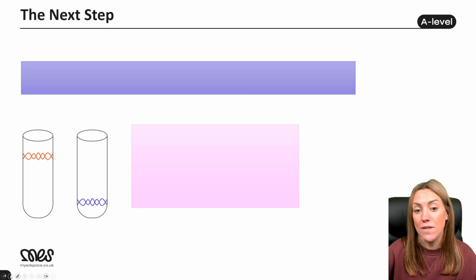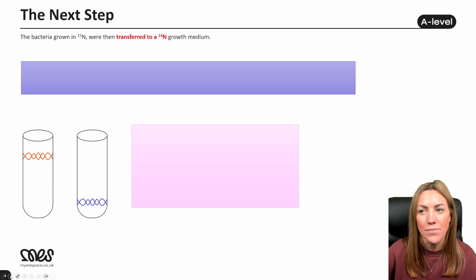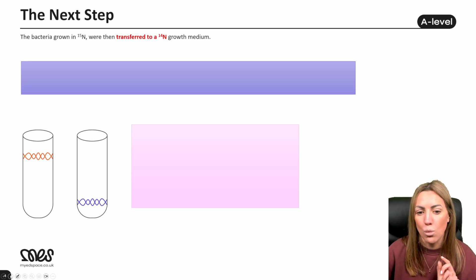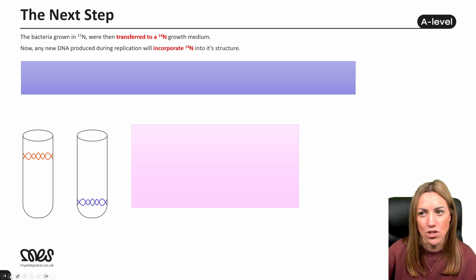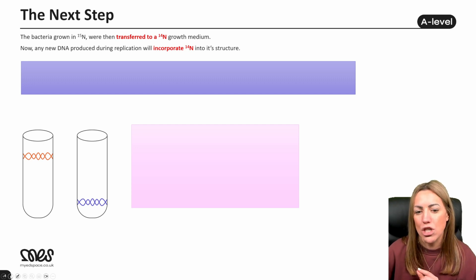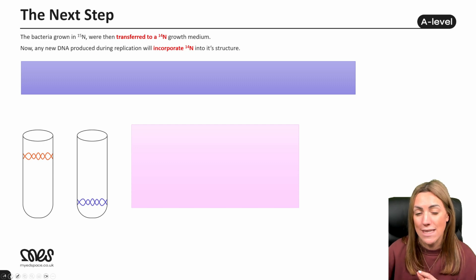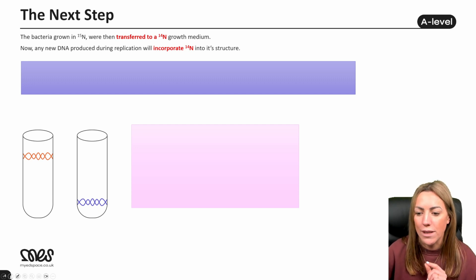We still haven't proven that DNA replication is semi-conservative, so let's look at the next steps. The bacteria that had been growing in N15 were then transferred to a different growth medium containing N14, or lighter nitrogen. Any new DNA they produce during replication will incorporate N14, or lighter nitrogen, into the bases.